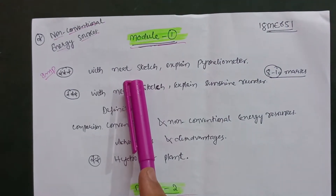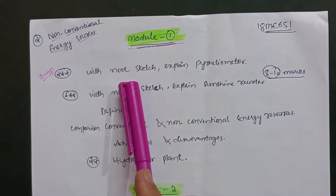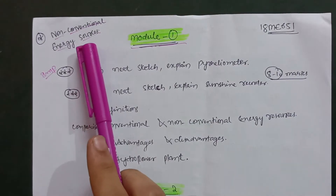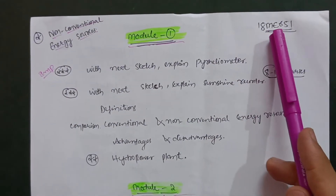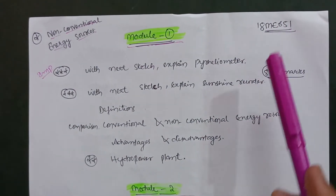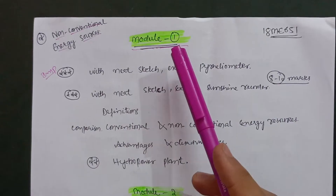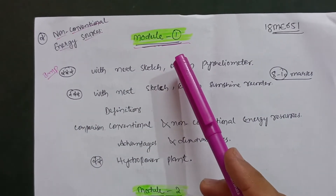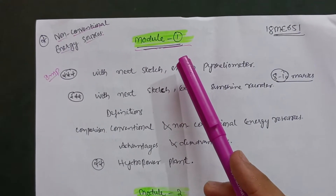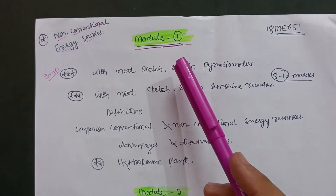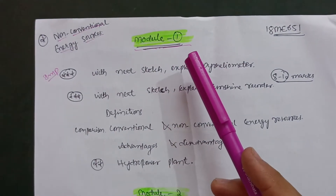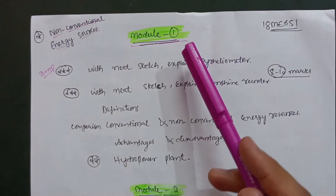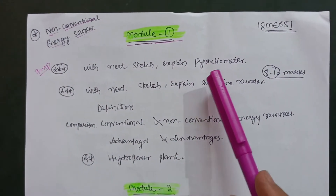Welcome back friends. Today I have another open elective subject: Non-Conventional Energy Sources, subject code 18ME651. It is a mechanical subject. It is also a problematic subject — some problems are there in certain modules — but don't worry. In this video I will discuss some important questions which are based on theory only. You can easily conquer the subject with the theory part if you just focus.